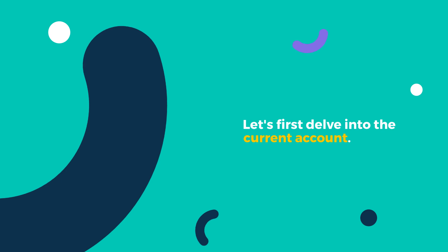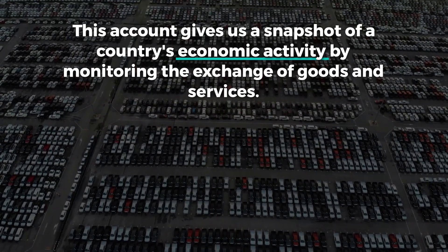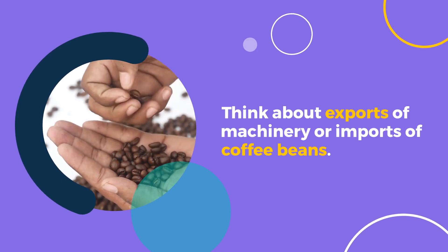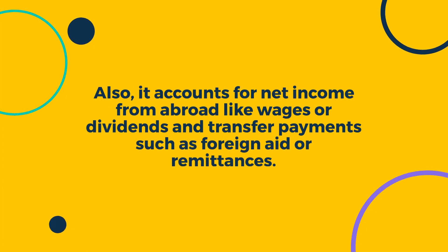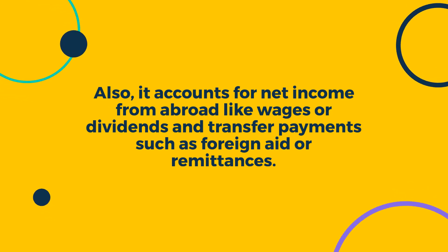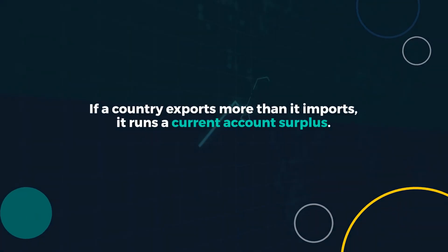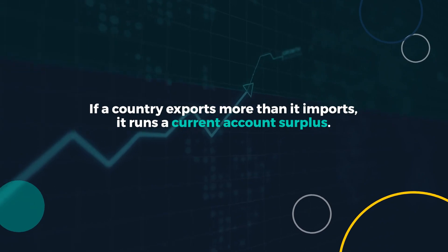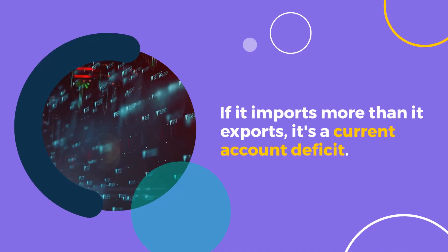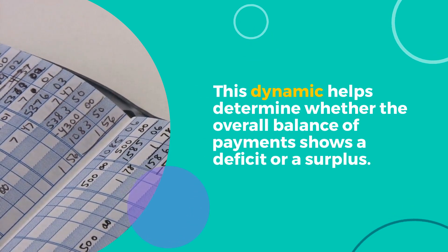Let's first delve into the current account. This account gives us a snapshot of a country's economic activity by monitoring the exchange of goods and services — think about exports of machinery or imports of coffee beans. It also accounts for net income from abroad like wages or dividends, and transfer payments such as foreign aid or remittances. If a country exports more than it imports, it runs a current account surplus; if it imports more than it exports, it's a current account deficit. This dynamic helps determine whether the overall balance of payments shows a deficit or a surplus.